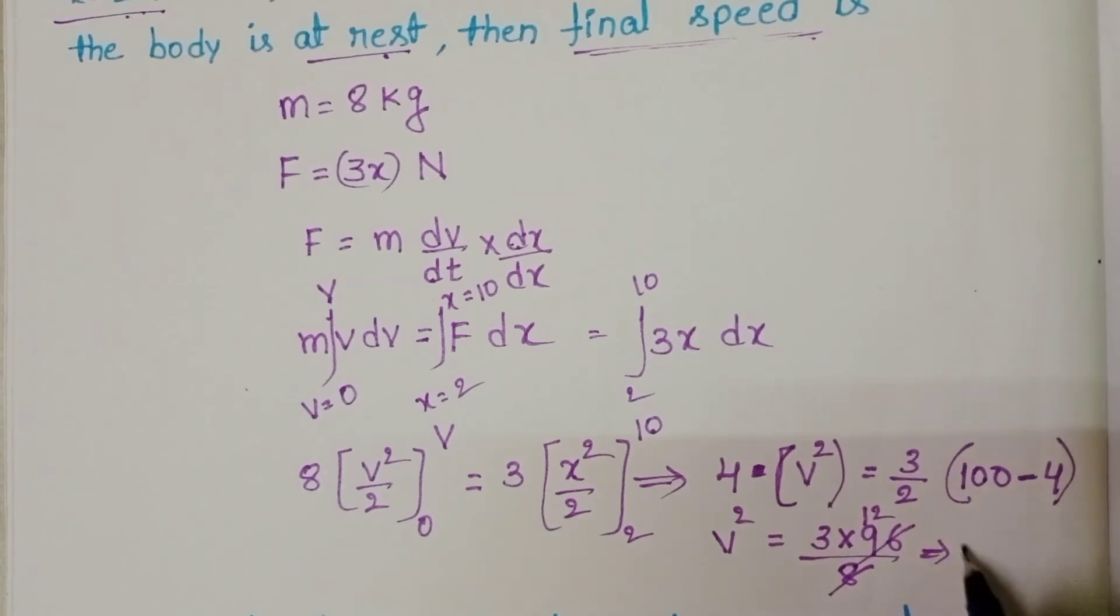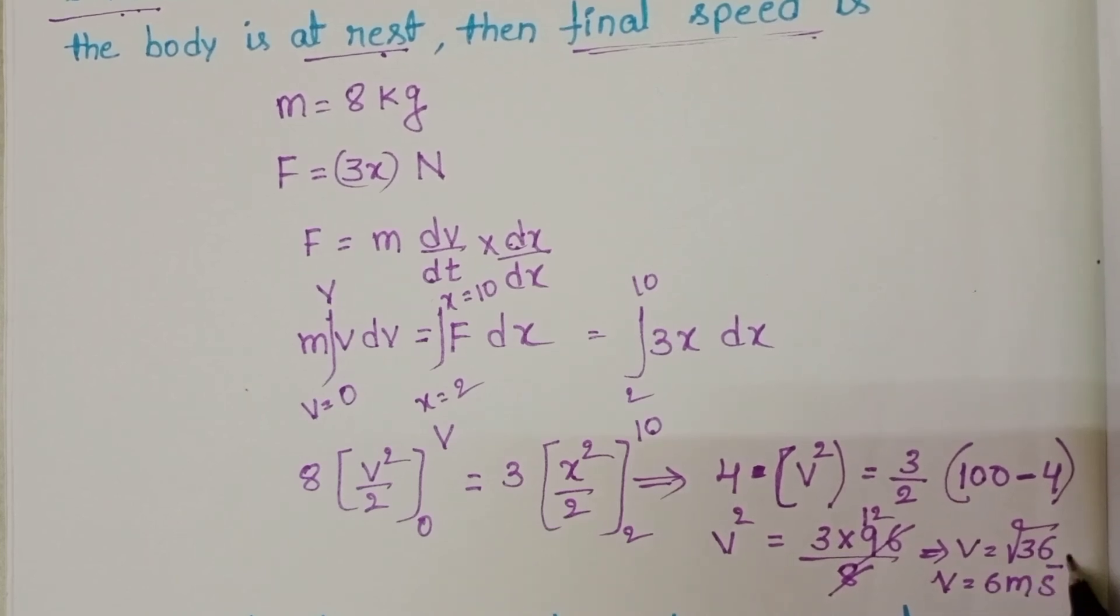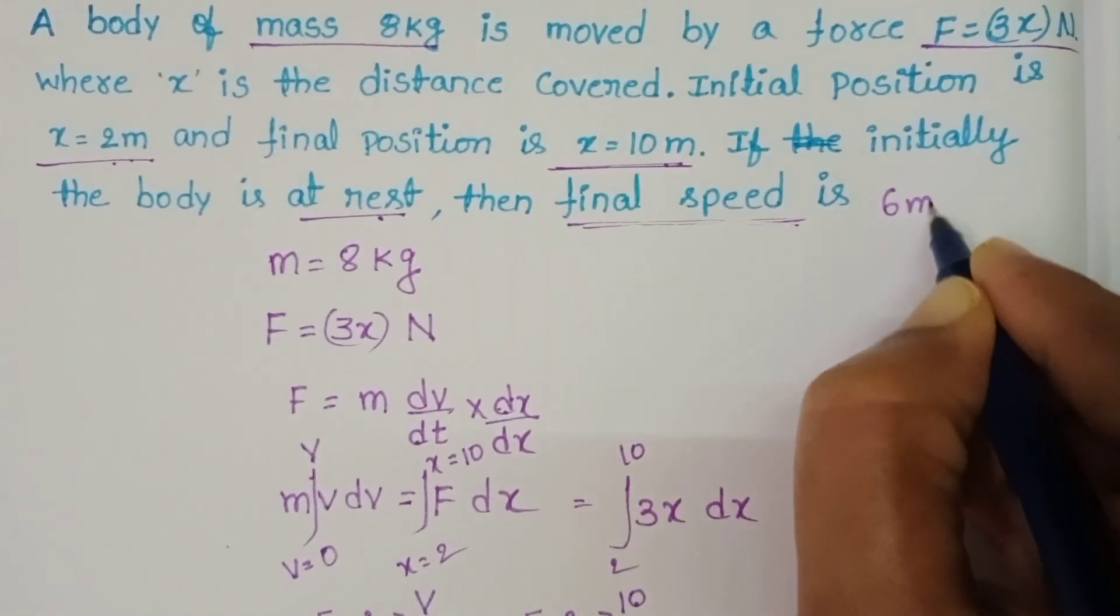So v equals square root of 36. Then v equals 6 meter per second. Final speed is 6 meter per second.